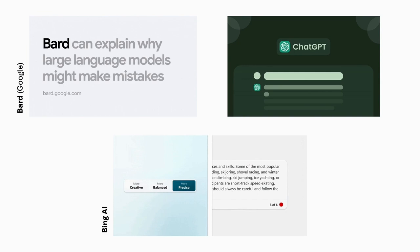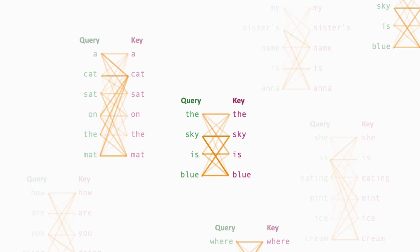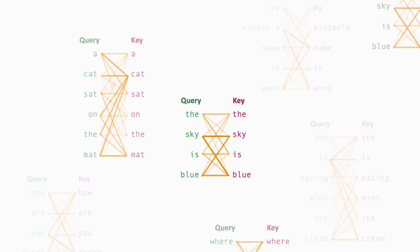Transformer models are revolutionizing machine learning, but their inner workings remain mysterious. One approach to studying transformers is visualizing self-attention of single input sequences, but what if we have thousands of inputs to explore?